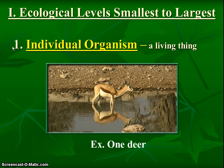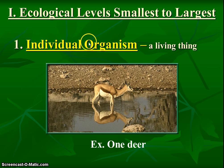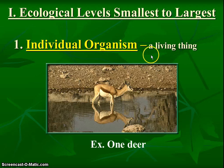Our first level, number one, is an individual organism. If you're looking super zoomed in — think about a camera zoomed in really far into the environment, as close as you can get — your camera would see one creature. For example, maybe we're only looking at one deer. We call that the individual organism, and the definition is just a living thing, because the word organism means living thing.